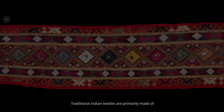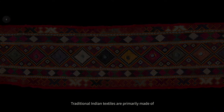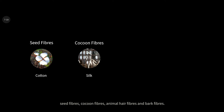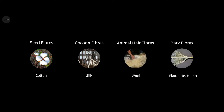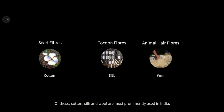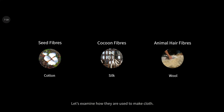Traditional Indian textiles are primarily made of seed fibers, cocoon fibers, animal hair fibers, and bark fibers. Of these, cotton, silk, and wool are most prominently used in India. Let's examine how they are used to make cloth.